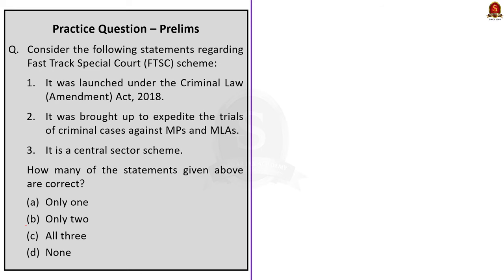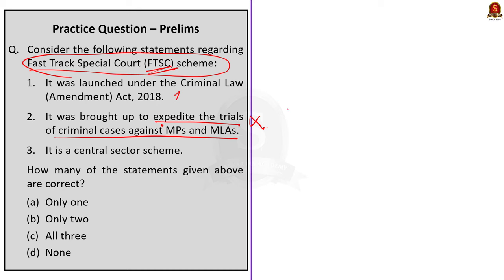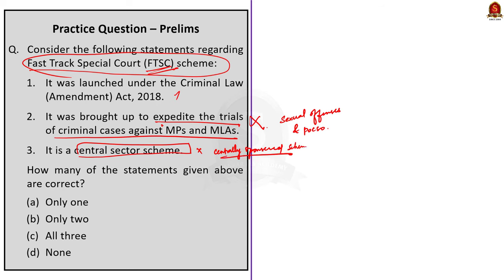See the second question: Consider the following statements regarding the Fast Track Special Court Scheme or FTSC. Statement 1 — it was launched under the Criminal Law Amendment Act 2018 — this is correct. Statement 2 — it was brought to expedite the trial of criminal cases against MPs and MLAs — this is incorrect; the scheme was brought to expedite trials related to sexual offences and deliver immediate relief to victims. Statement 3 — it is a central sector scheme — this is also incorrect, because the scheme is centrally sponsored, meaning the funds are shared between state and central government. Eliminating statements 2 and 3, the correct option is option A.